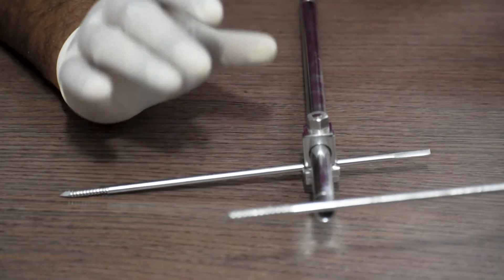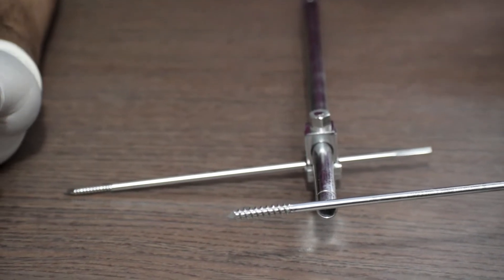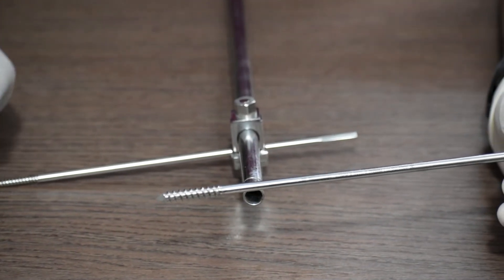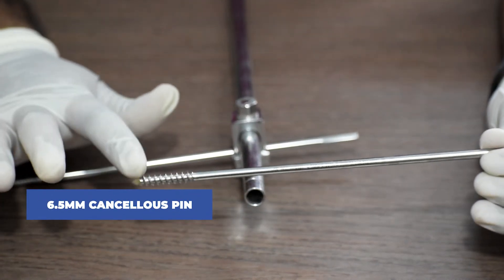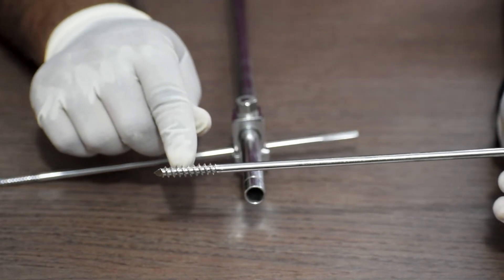Now when the fracture is near the condyle part or the cancellous part, like near the ankle region, in such case we will use the cancellous pin. As you can see, the threads are bigger in the cancellous spin.